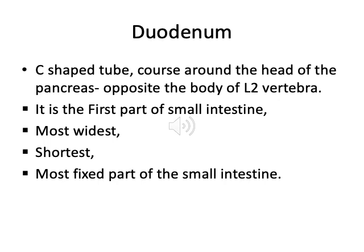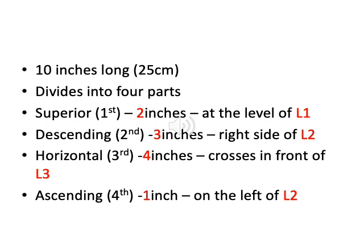The duodenum is a C-shaped tube that courses around the head of the pancreas. It is located opposite the body of the L2 vertebra. It is the first, widest, and shortest part of the small intestine. The duodenum is a 25 cm long tube, and it divides into four parts: first, second, third, and fourth.